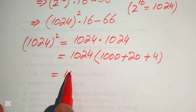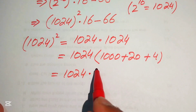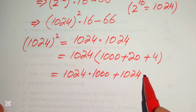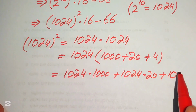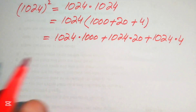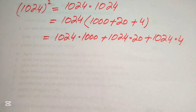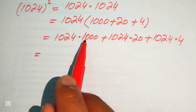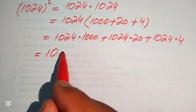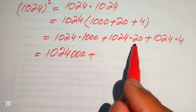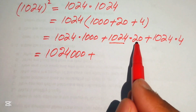We multiply 1024 by each of those terms: 1024 multiplied by 1000, plus 1024 multiplied by 20, plus 1024 multiplied by 4. Remember, a calculator is not allowed, so we do all the working by hand. Multiplying 1024 by 1000, we simply add three zeros, giving 1024000.